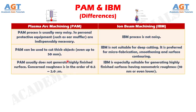Difference number 12: plasma arc machining usually does not generate a highly finished surface — the surface roughness is in the order of 0.5 to 2 micrometers. Whereas iron beam machining is especially suitable for generating highly finished surfaces having nanometric roughness, about 10 nanometers or even lower.